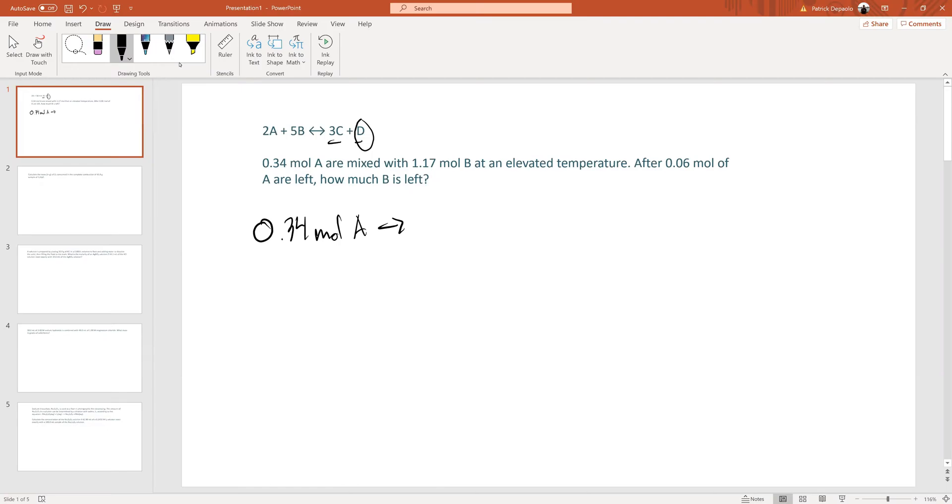If we have two moles of A makes one mole of D, then 0.34 moles of A would make half of that, which is 0.17 moles of D.